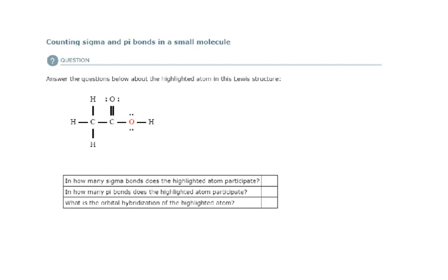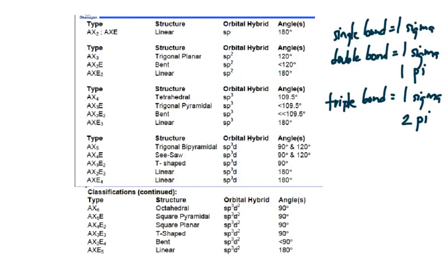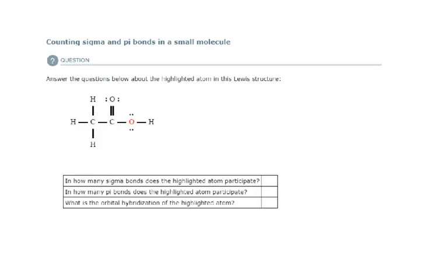In this example problem we are doing the same thing except we have a different molecule, and the highlighted atom is oxygen. How many sigma bonds does the highlighted atom participate in? This highlighted oxygen atom only participates in two bonds and they are both single bonds. In a single bond, that one bond is considered a sigma bond. So here's a single bond, here's a single bond — that must be two sigma bonds.